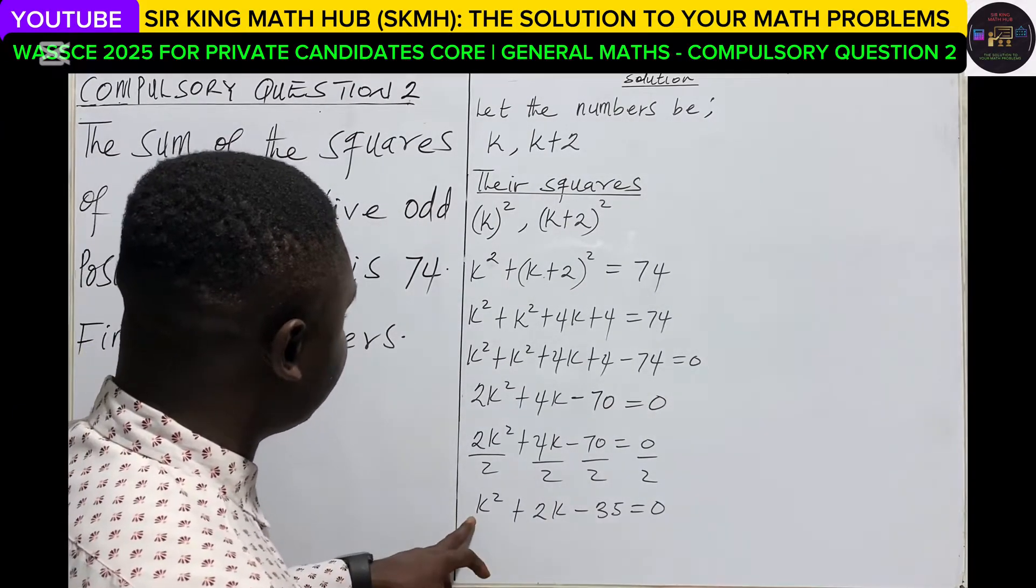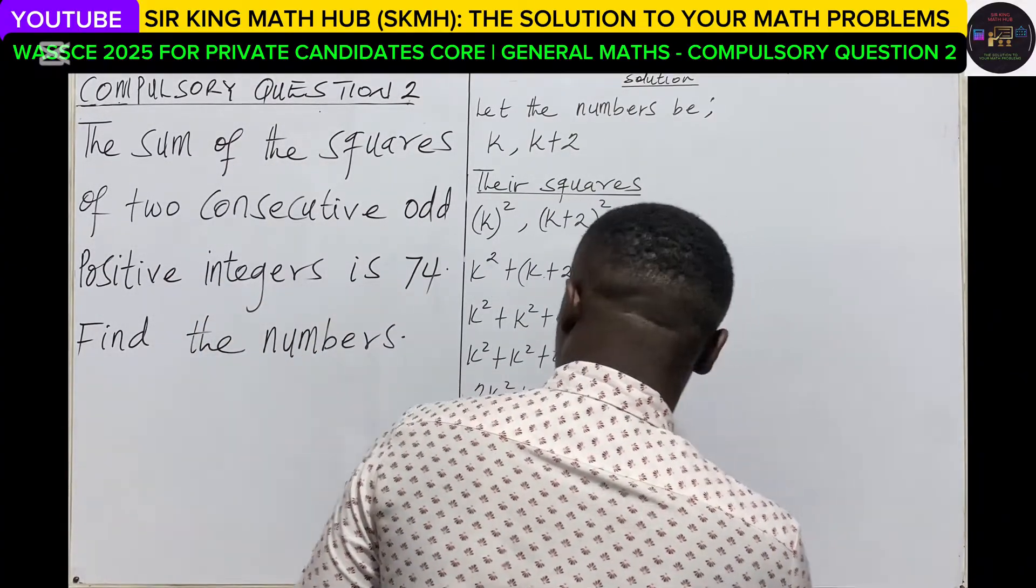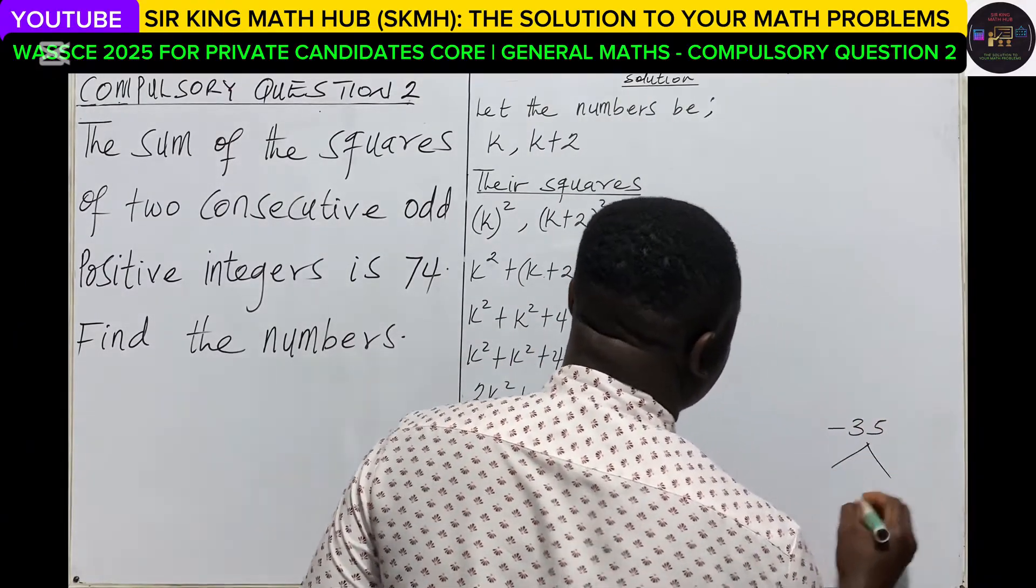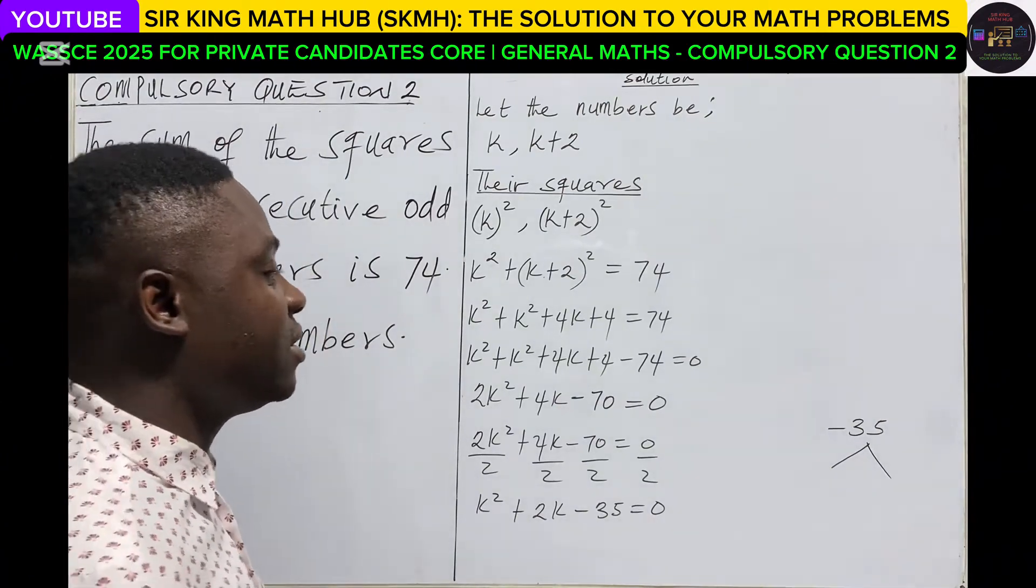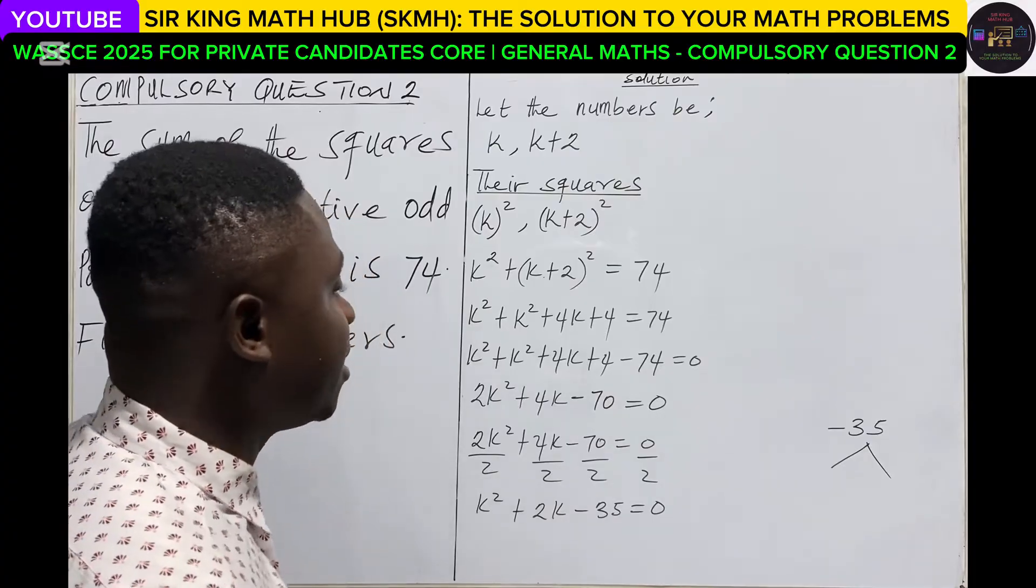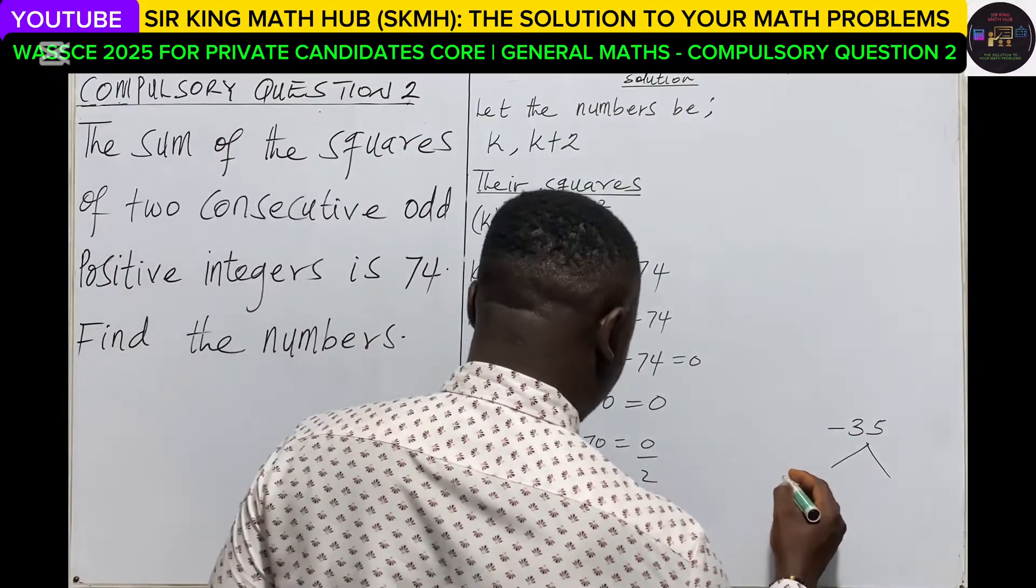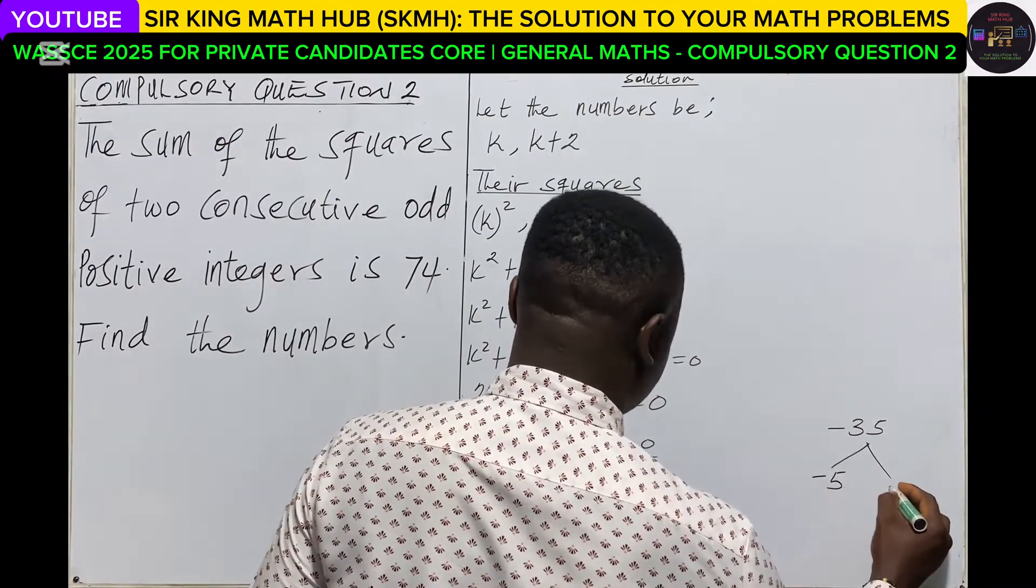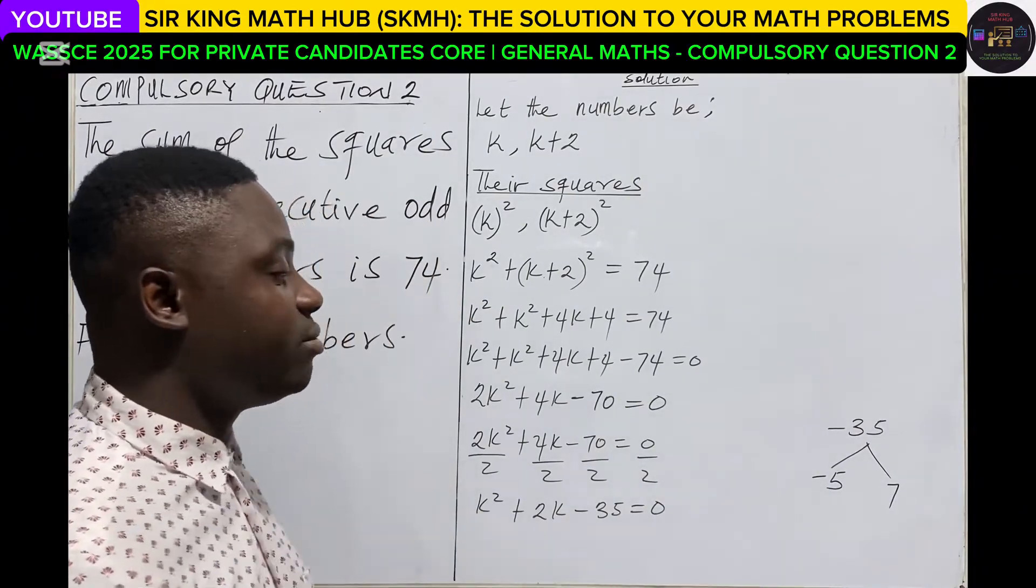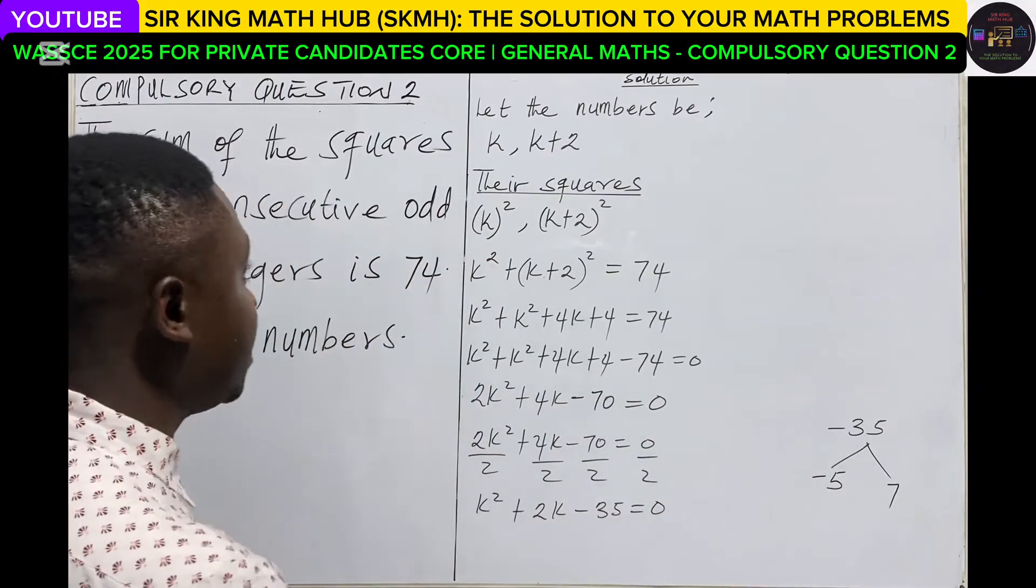So the coefficient of k squared is 1 and the constant here is minus 35. So 1 multiplied by minus 35, that is minus 35. We are looking for factors of minus 35 such that when we add them we get positive 2. So what are the factors? The factors will be negative 5, positive 7, because minus 5 multiplying positive 7 is negative 35, and again minus 5 plus 7 is positive 2.